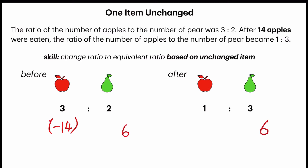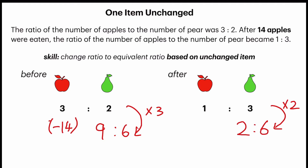For the ratio on the left-hand side, we need to multiply by 3. So 3 times 3 gives me 9. The new ratio will be 9 to 6. And for the ratio on the right-hand side, we need to multiply by 2. So 1 times 2 gives me 2. Now let's observe: the units for apple before was 9, and the units for apple after is 2. So what has happened? 9 minus 2 gives me 7.